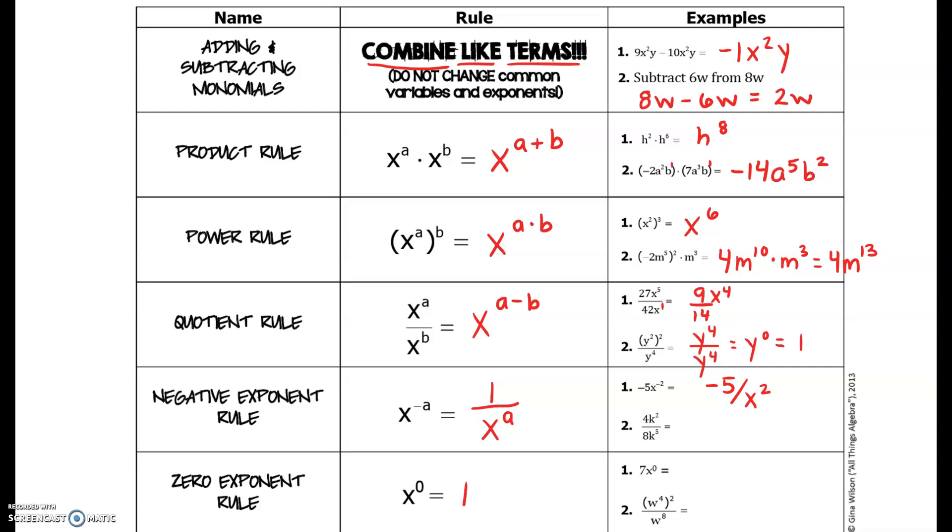In number two, four over eight again is a fraction. It would reduce to one half. And as I subtract two and five, I will get k to the negative third. In order to eliminate that negative exponent, move it to the bottom of the fraction with the two and make the three positive.